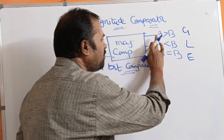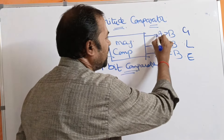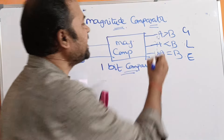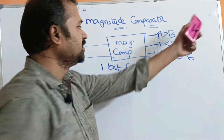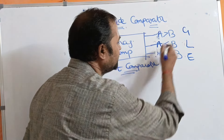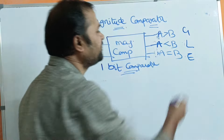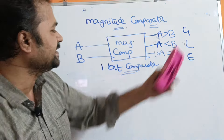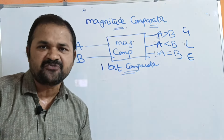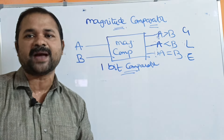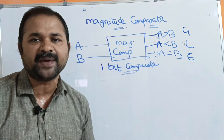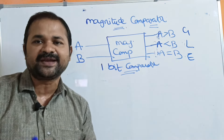Let us denote A greater than B by G, A less than B by L, and A is equal to B by E. We have different types of magnitude comparators such as 1-bit comparator, 2-bit comparator, and 4-bit comparator.